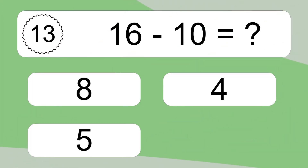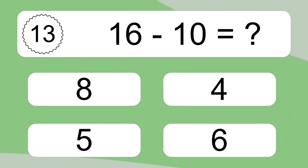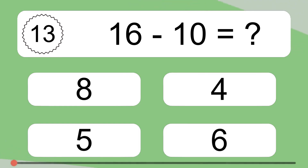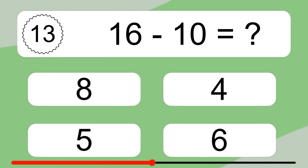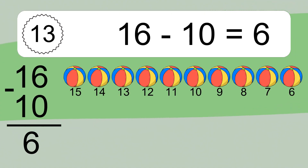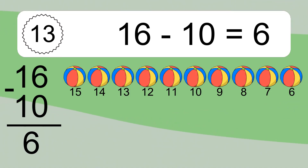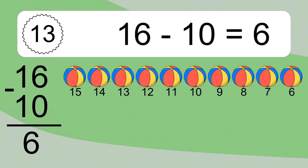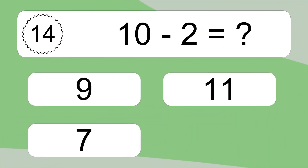16 minus 10 equals what? 16 minus 10 equals 6. Let's count it: 15, 14, 13, 12, 11, 10, 9, 8, 7, 6.